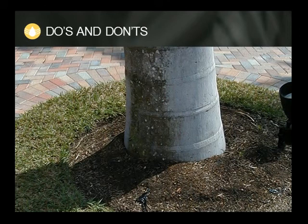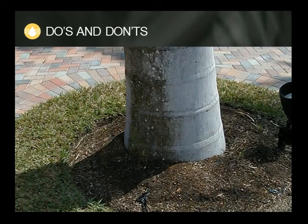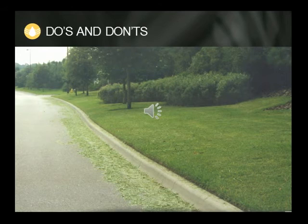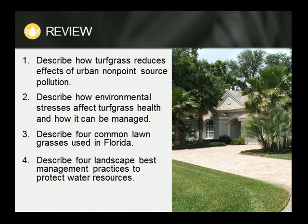Let's take a moment to review a few scenarios occurring in a typical landscape. Does the image demonstrate a best management practice according to what you have learned so far in this presentation? Is this something you would do or not do? Don't — use mulch, not grass, in areas such as this. Don't — do make appropriate pruning cuts as necessary, and avoid damaging other parts of the tree in the process. Don't — clippings contain nutrients and should be recycled on the lawn. The nutrients in clippings are pollutants when they end up in stormwater systems and water bodies. Do: sweep or blow clippings off impervious surfaces and back onto the lawn.